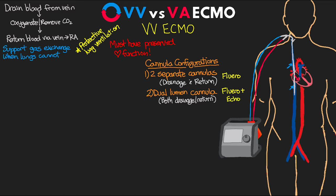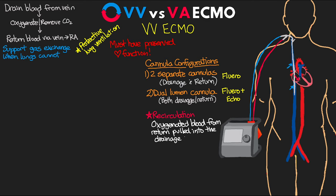A problem exclusive to VV ECMO is recirculation — when oxygenated blood from the return cannula gets pulled back into the ECMO circuit by the drainage cannula. This decreases the level of support provided by ECMO and can be extensive in some cases. Oxygenated blood that doesn't need the circuit takes up the space of deoxygenated blood, so we oxygenate less new blood and provide less support for these patients.